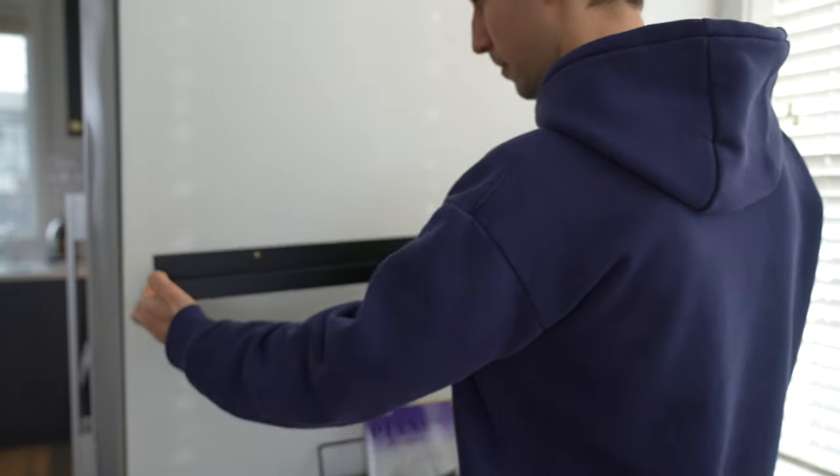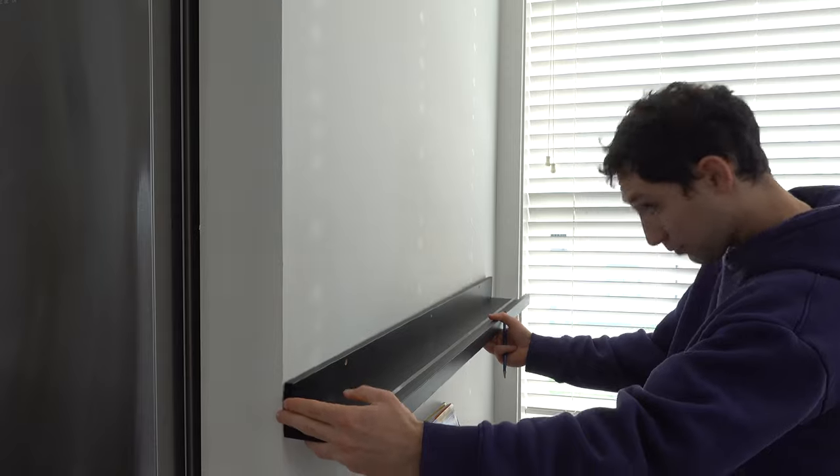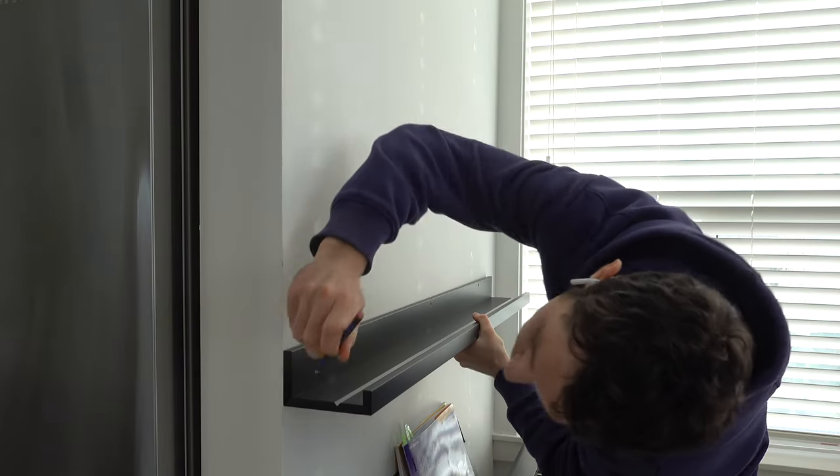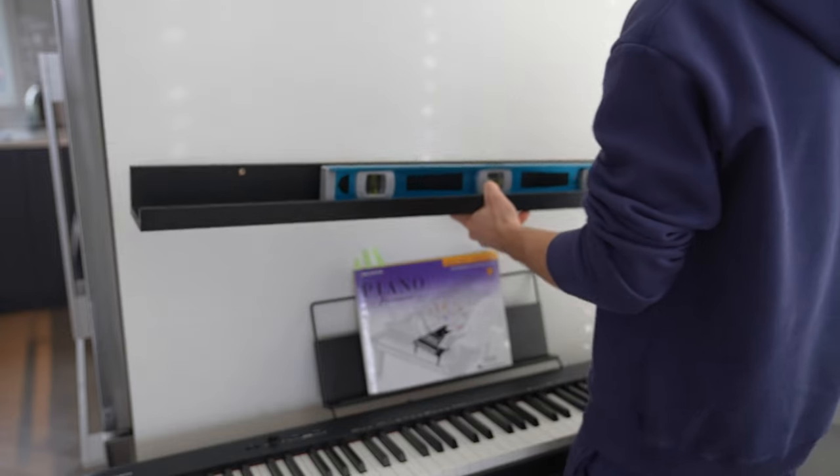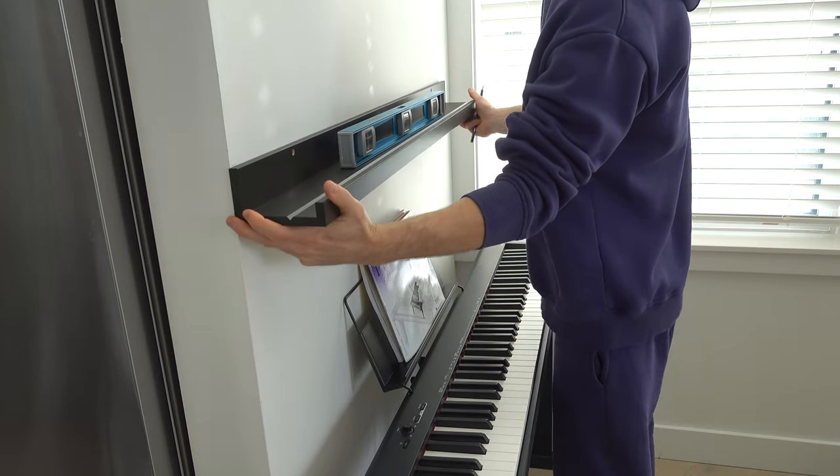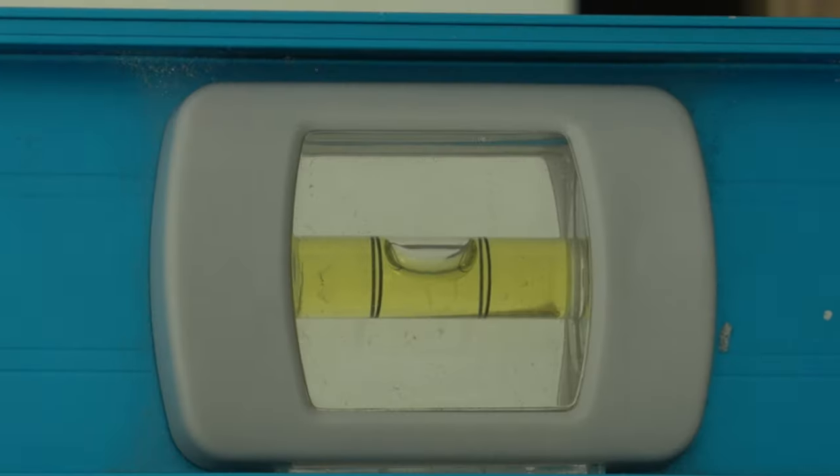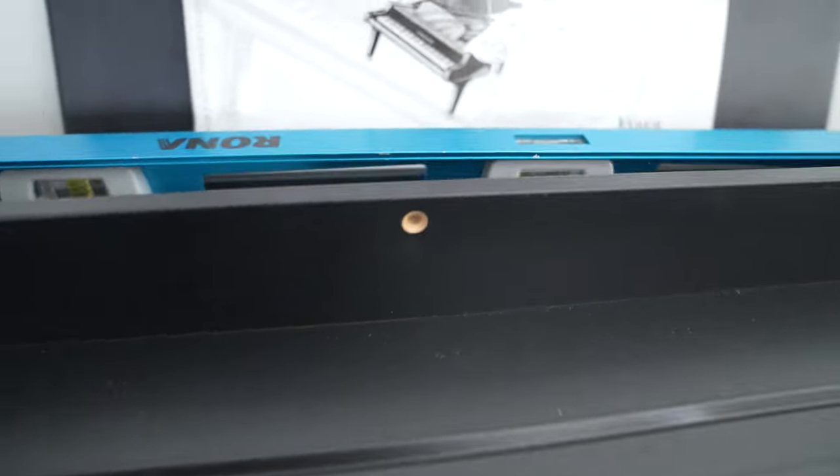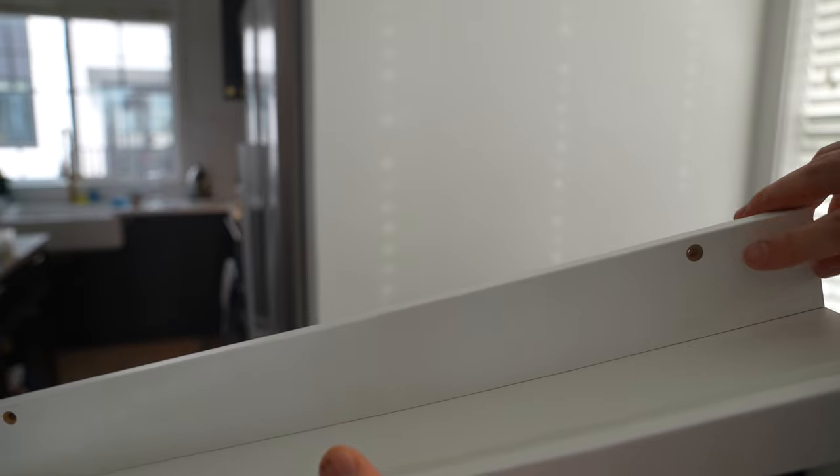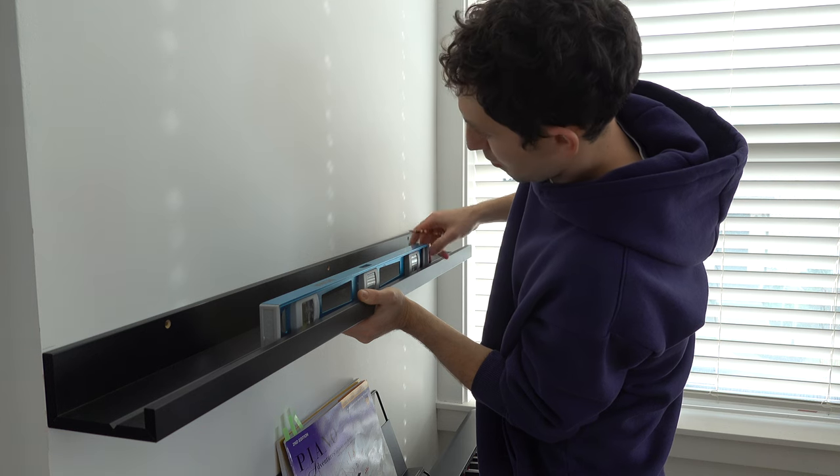Try on the shelf to the wall and mark the position with a pencil. If you are using a level, put it on the shelf and firmly hold the shelf against the wall. Make sure it's leveled. There are two or three pre-drilled holes for screws in the shelf depending on the length. Mark screw holes on the wall with a pencil.